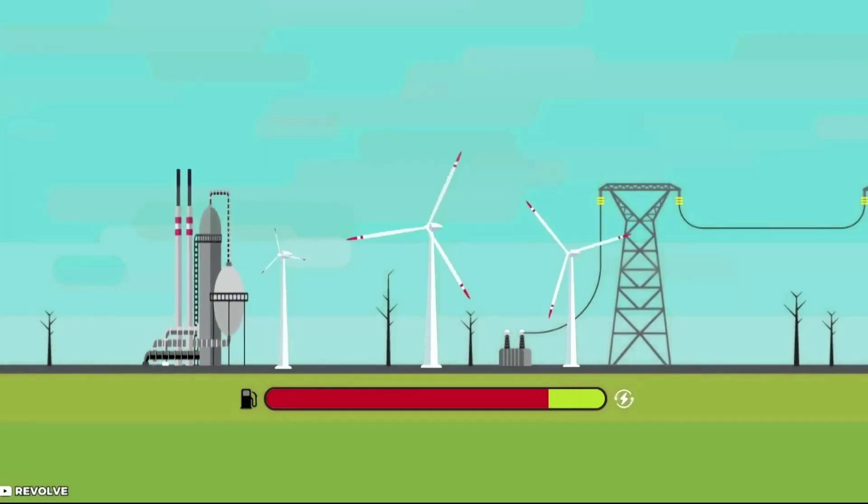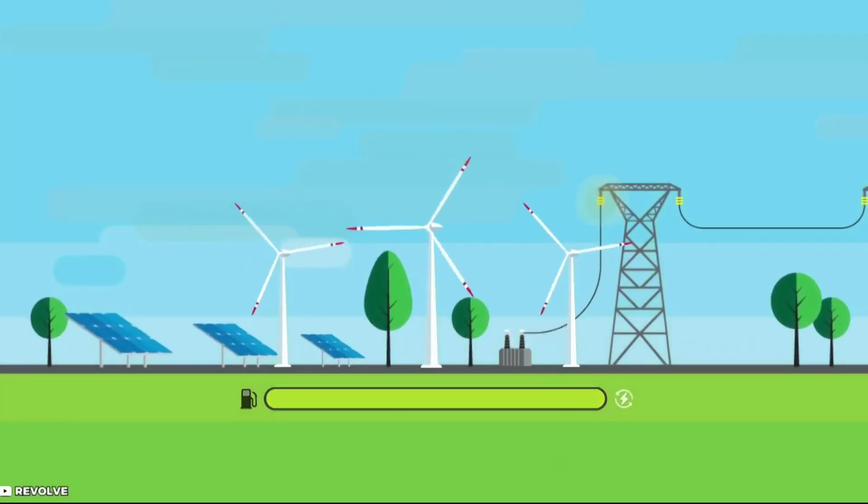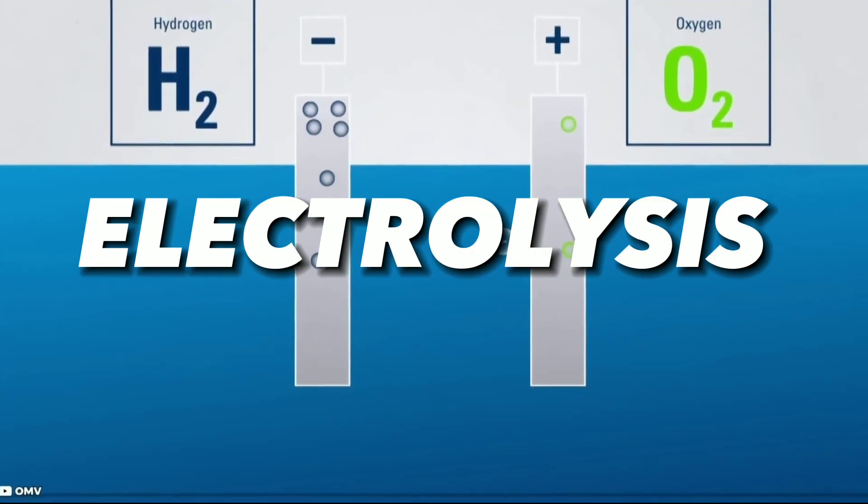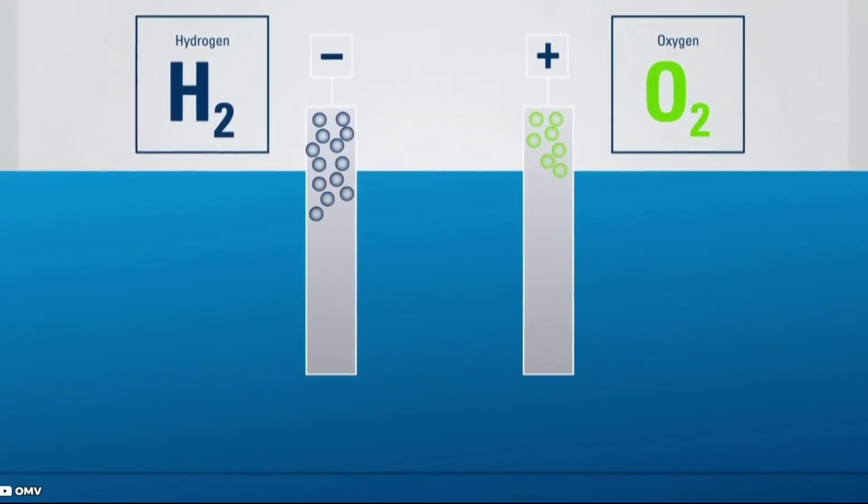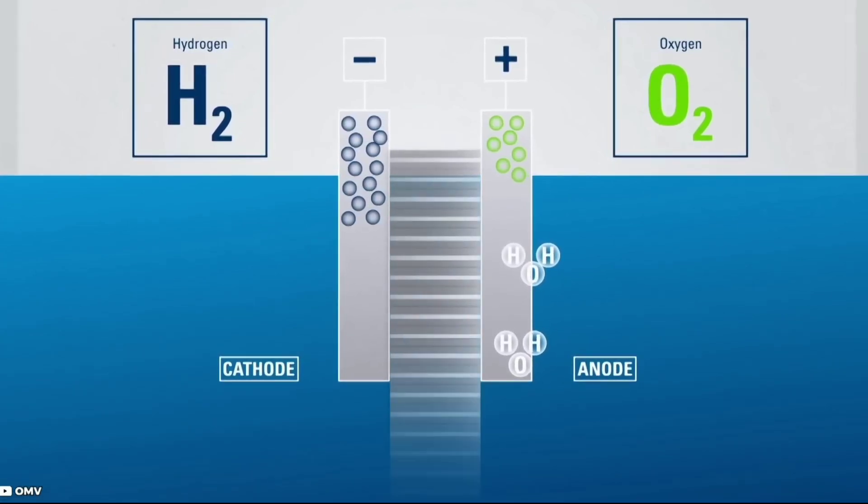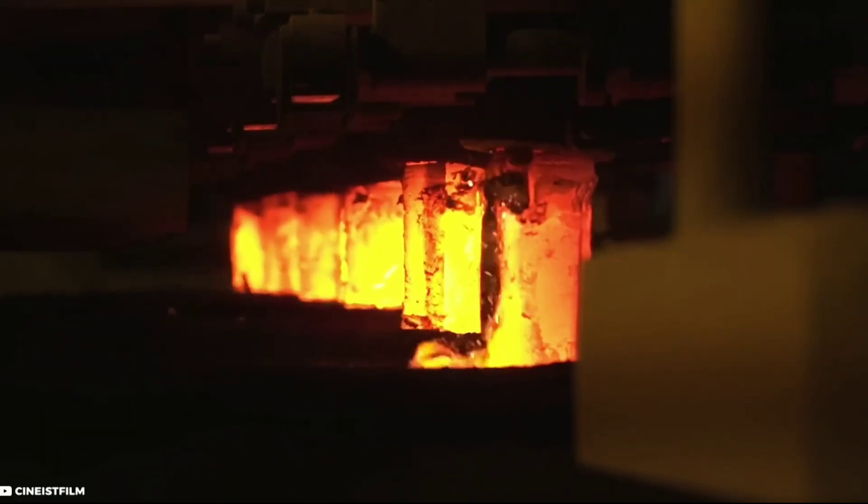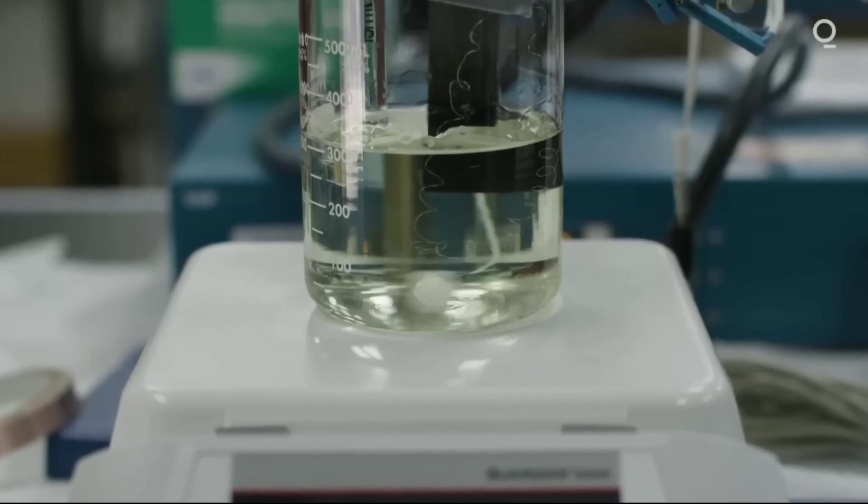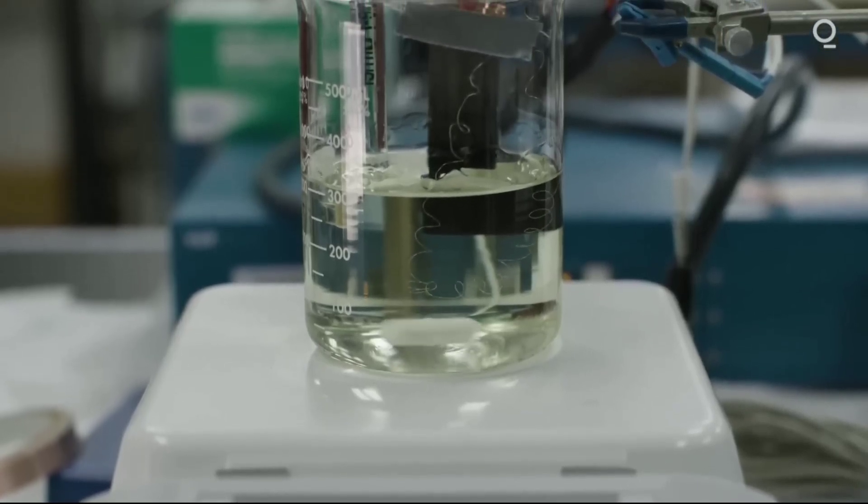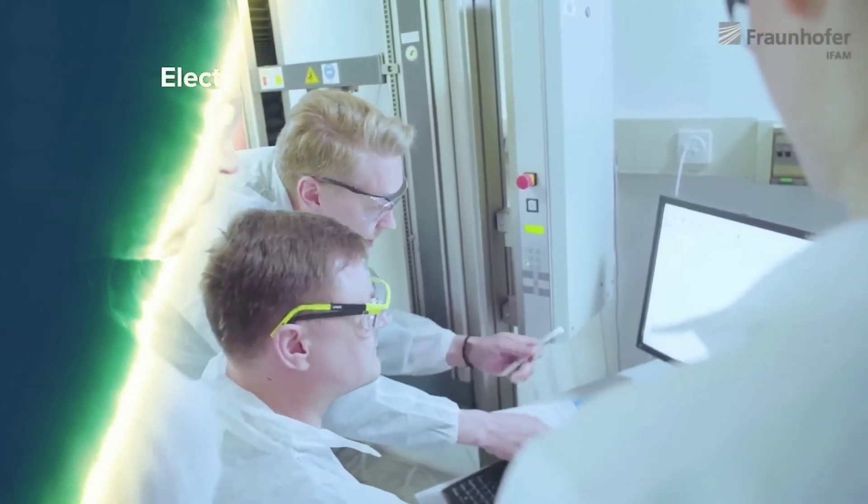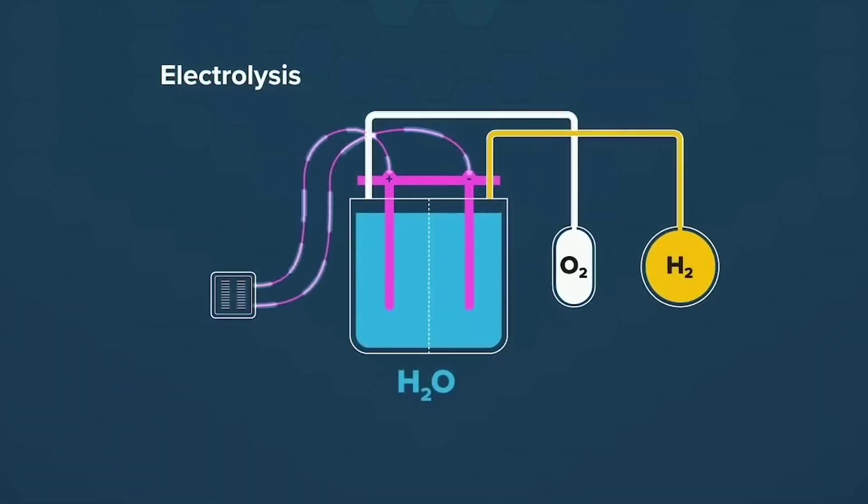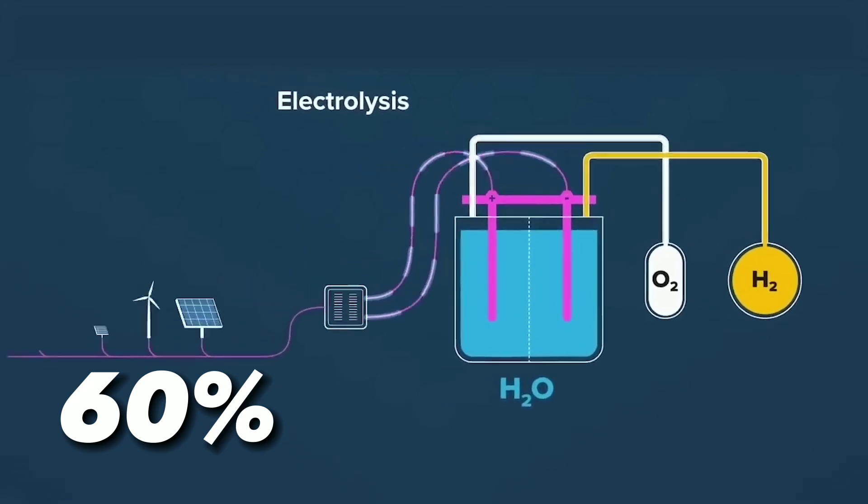A more eco-friendly but expensive way of producing hydrogen is electrolysis. This process uses electricity to split water molecules into hydrogen and oxygen. Electrolysis does not produce any harmful emissions, but it requires costly metals and a lot of electricity. The efficiency of electrolysis is also lower than steam methane reforming, with a maximum of 60 percent conversion rate.